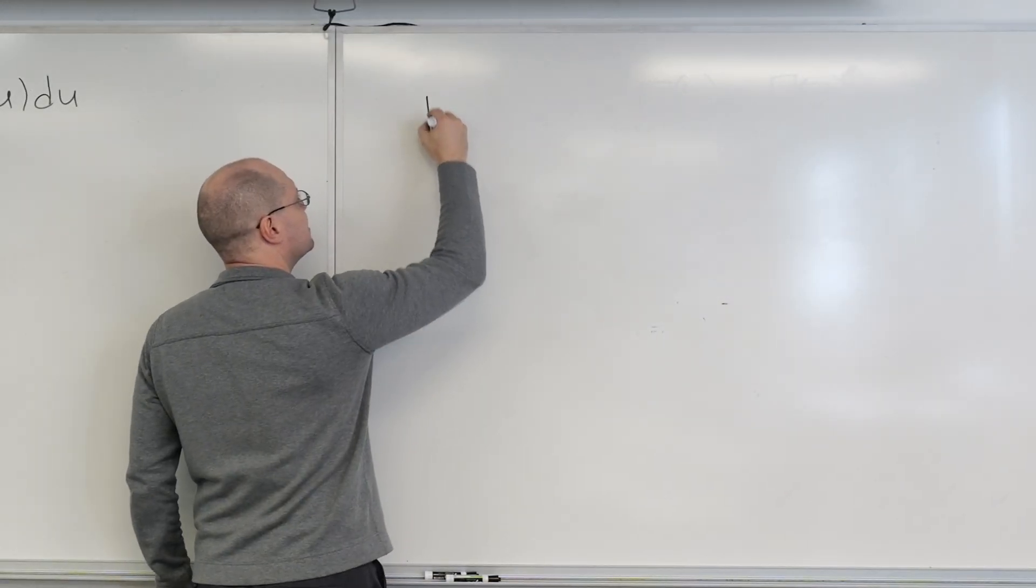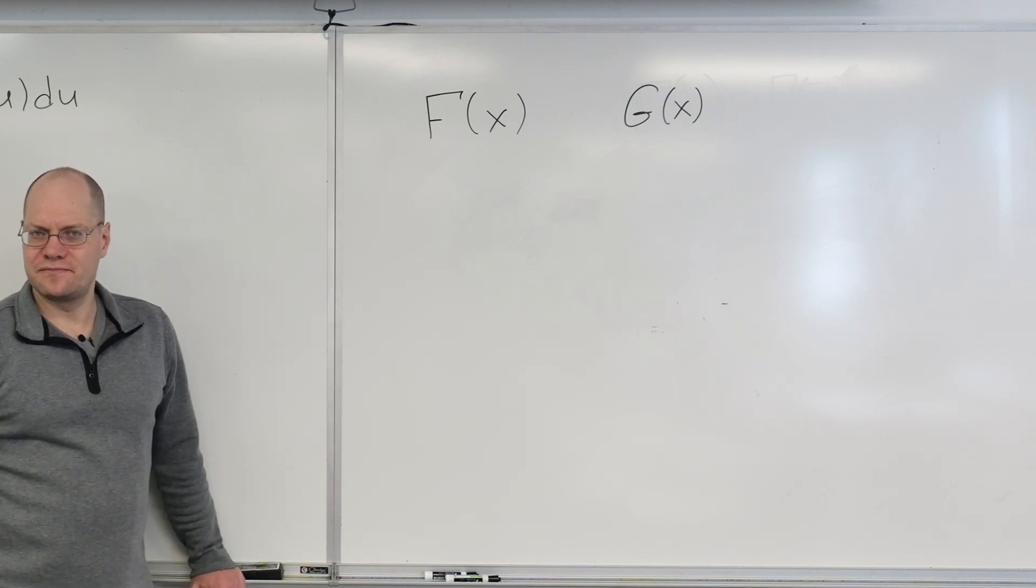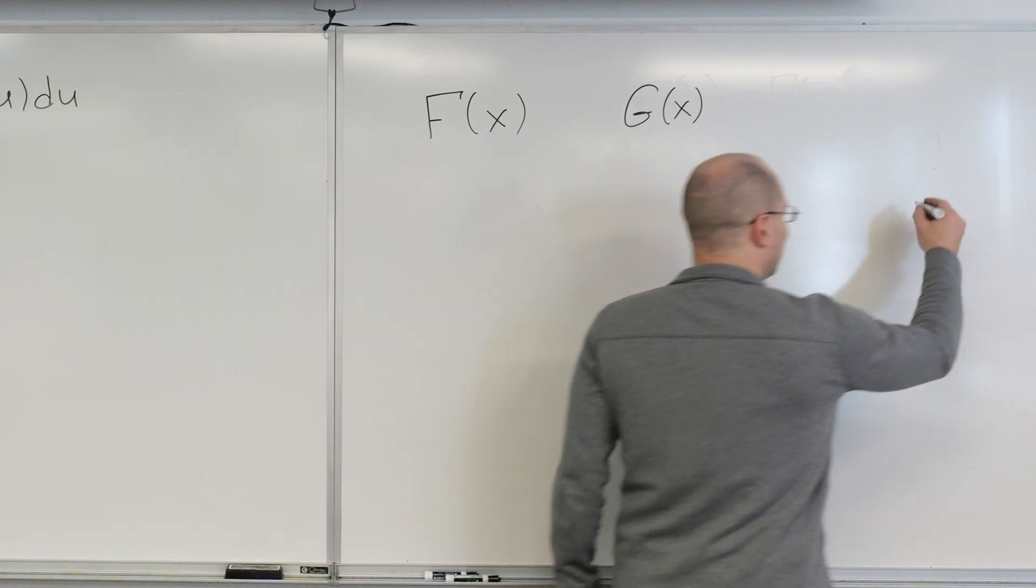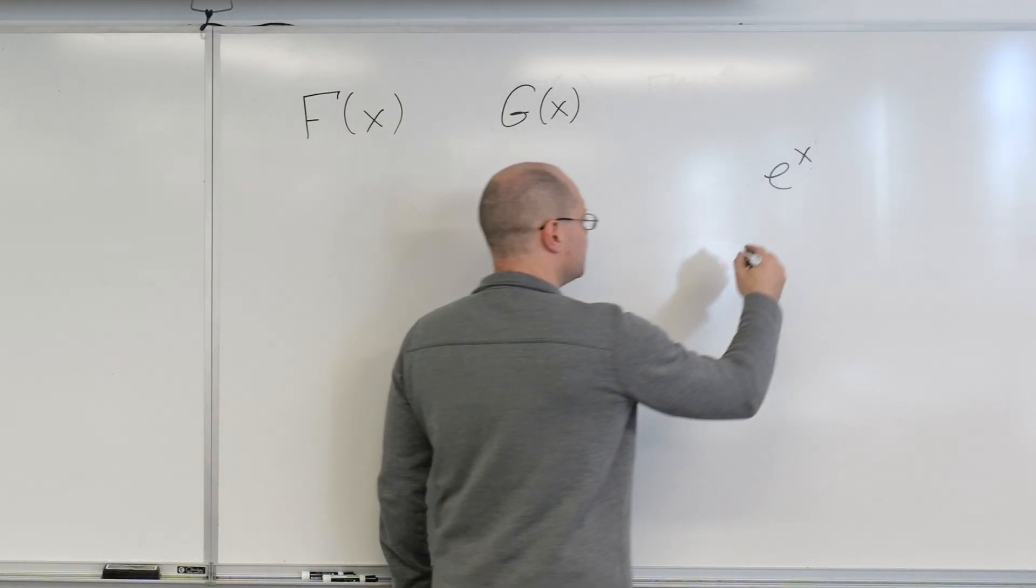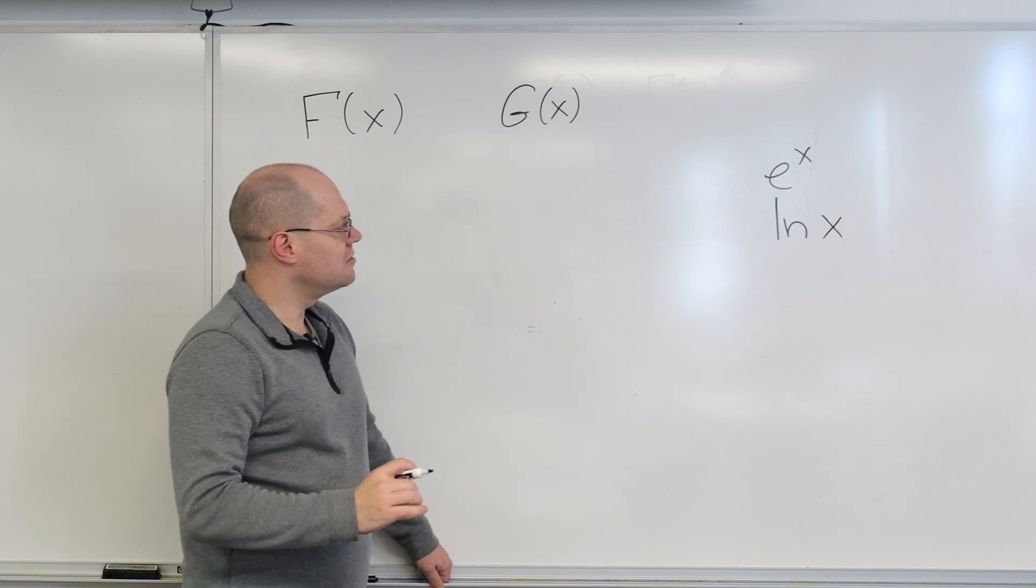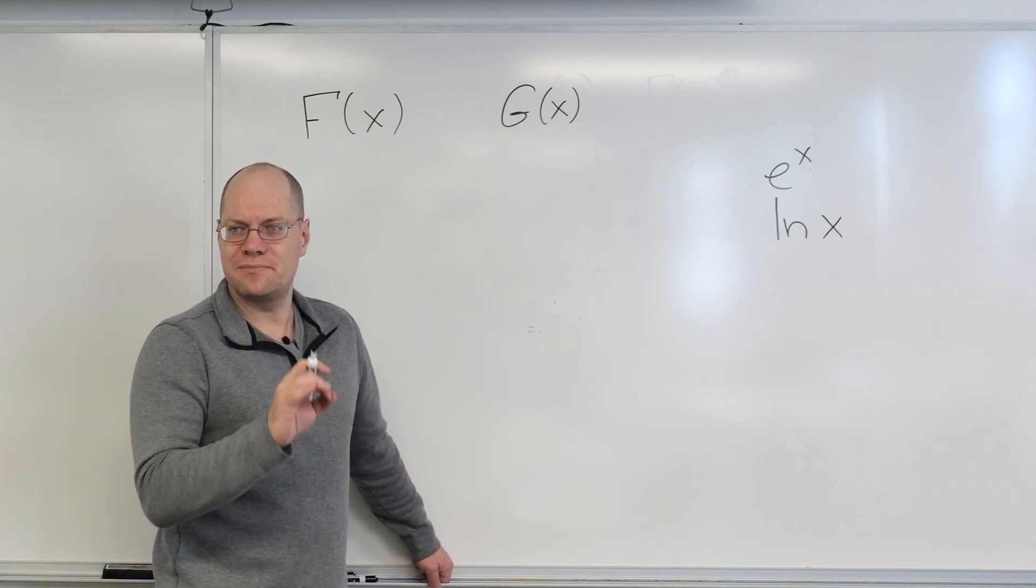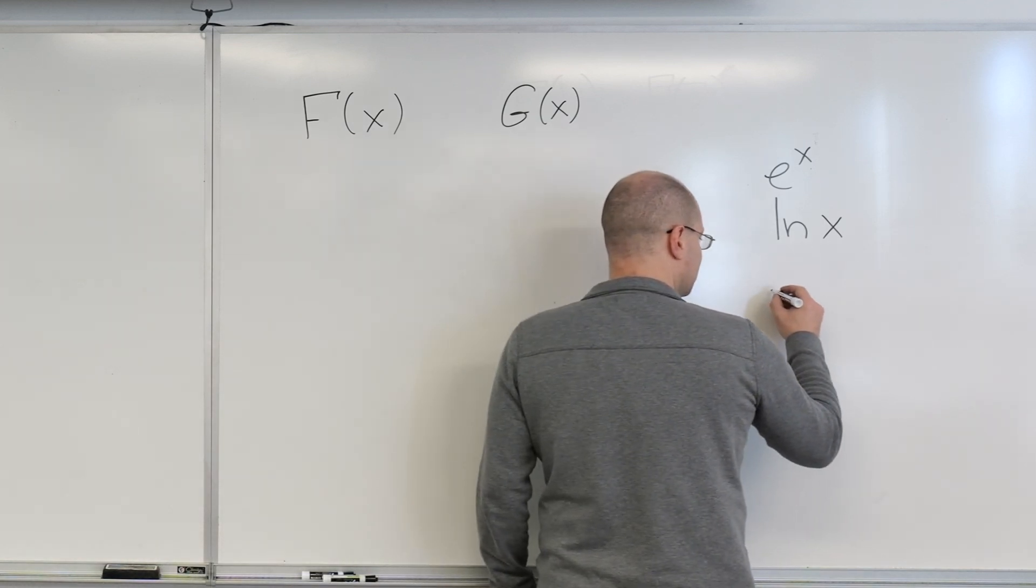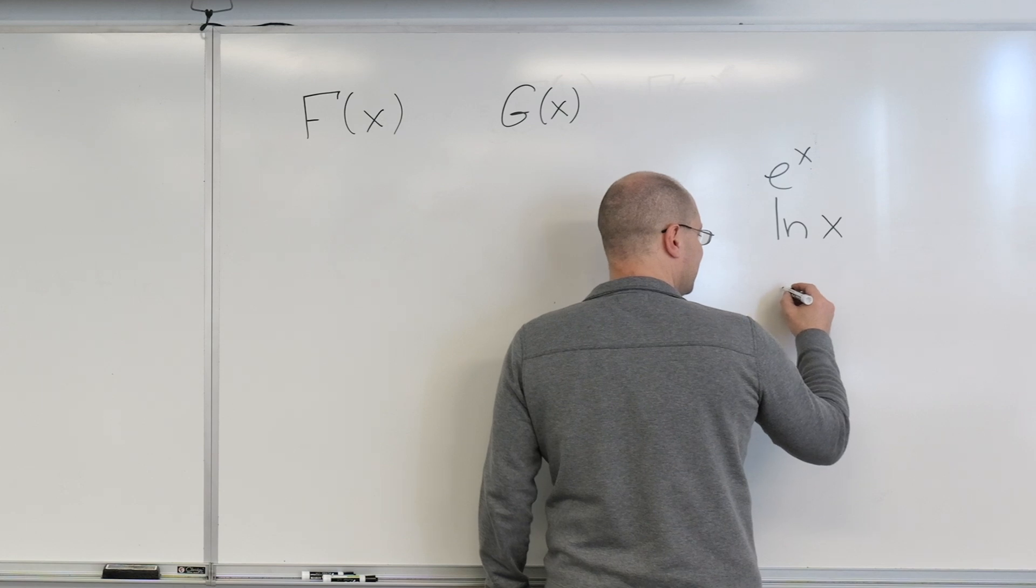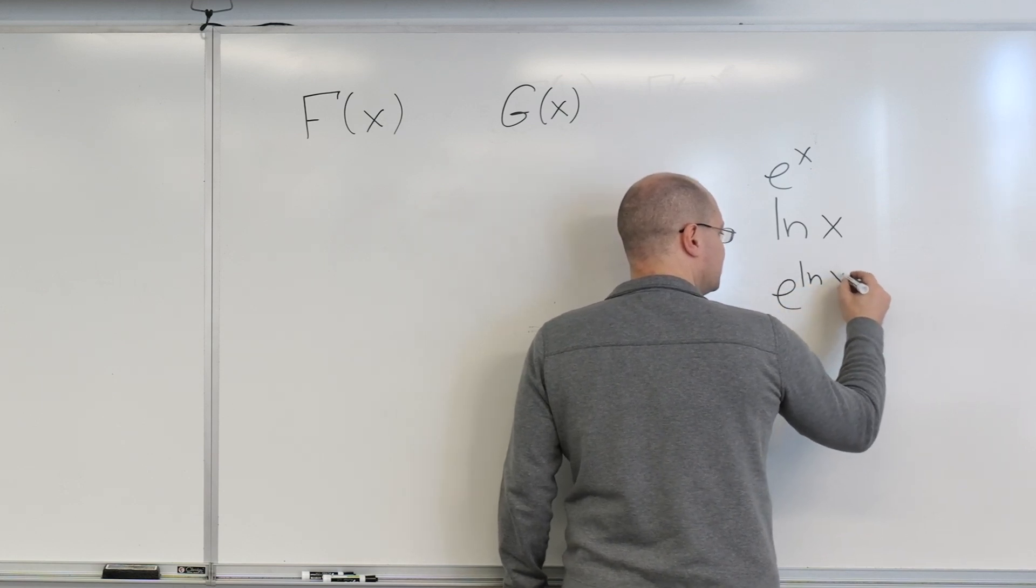Suppose we have two functions, f and g. And they're the inverses of each other. For example, we could have e of x. And what's the inverse of e of x? Log naturally. And so let's try to write down what it is that makes them the inverses of each other. And what it is that makes them the inverses of each other is that if I take log of x and I plug it into the e to the x, then I get back x.